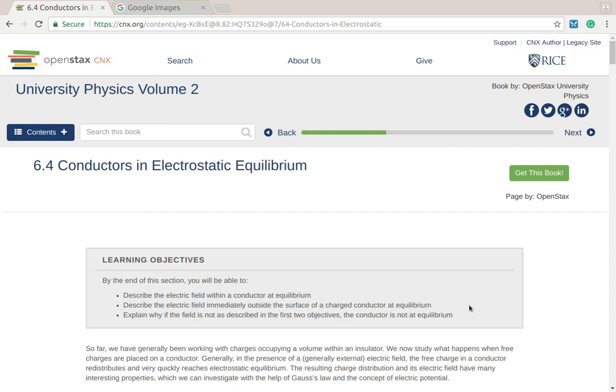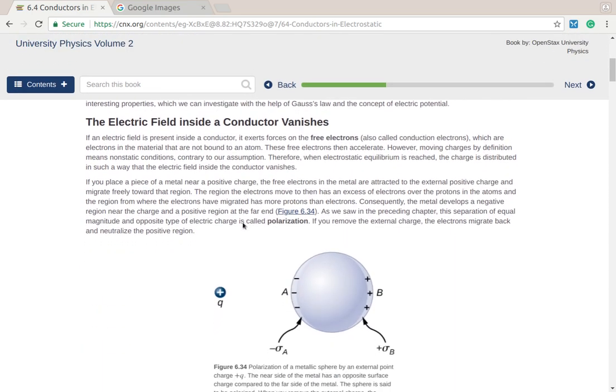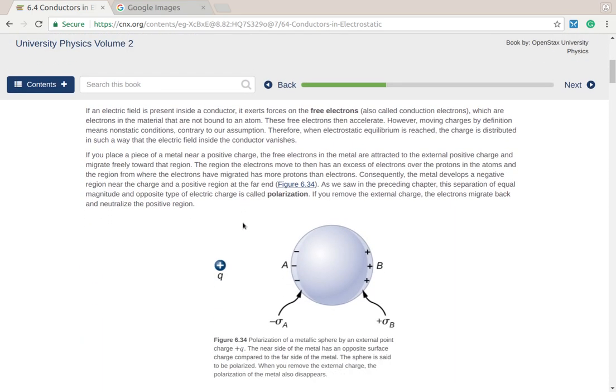Now let's talk about what happens if you put a conductor in an electric field. We've already discussed in some of the other videos, and you've got stuff in the textbook here, and this comes from OpenStax, which is what I assign my students, that if you place charge on a conductor, the charge is going to rearrange itself and place the charge at the surface.